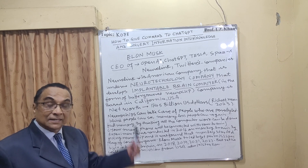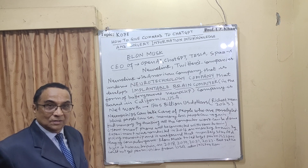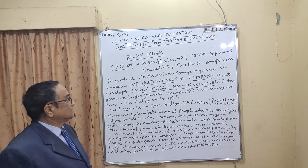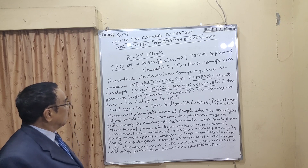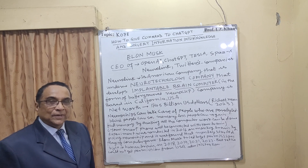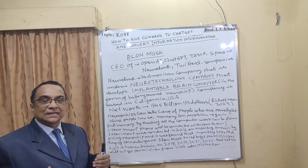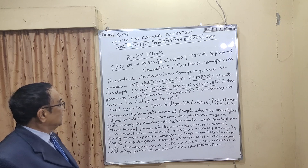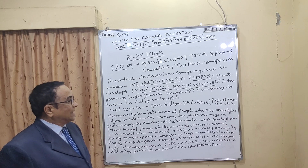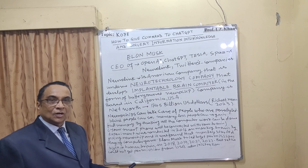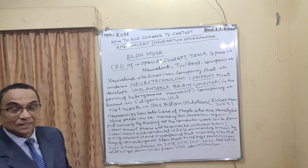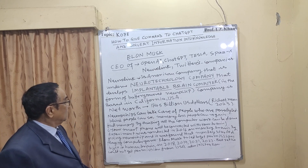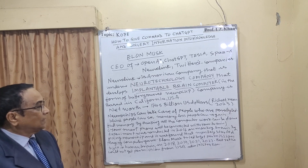Elon Musk is the CEO of OpenAI ChatGPT, Tesla, SpaceX, Neuralink, and Twitter. Neuralink is an American neuro-technology company working on the brain and chips — it develops implantable brain-computer interfaces. That neuro-technology company is developing brain chips, or neuro chips, in the form of a battery-powered neuro chip.